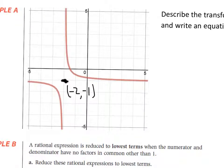We check for stretch by going over 1 and seeing how far we have to go up. So, since here when I go over 1, I'm not going up 1, I'm going up a half. That means I have a stretch of 0.5.